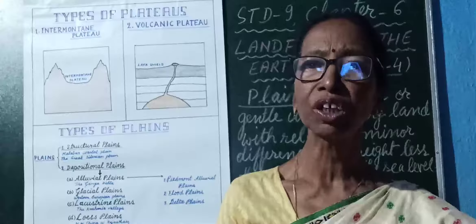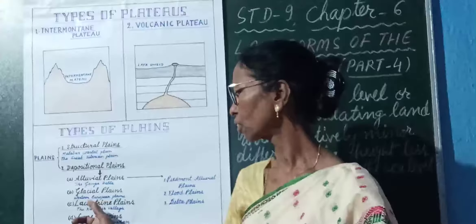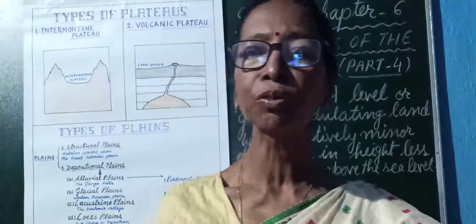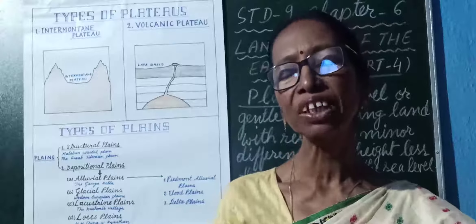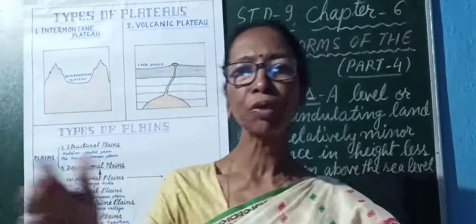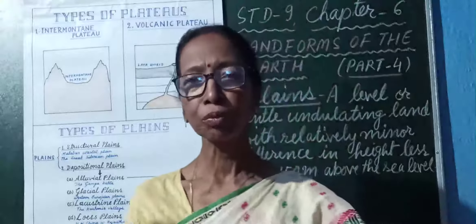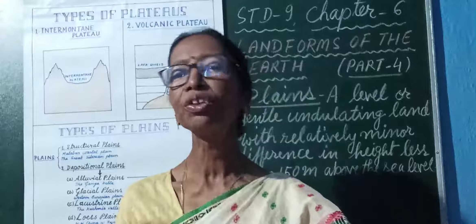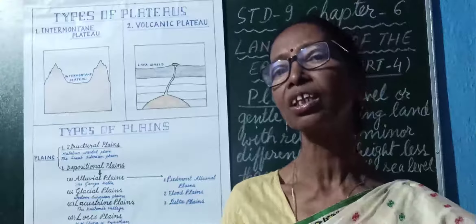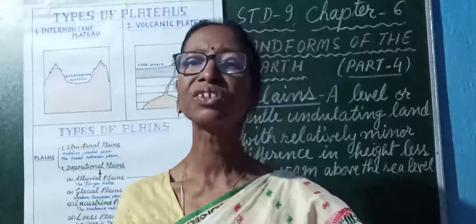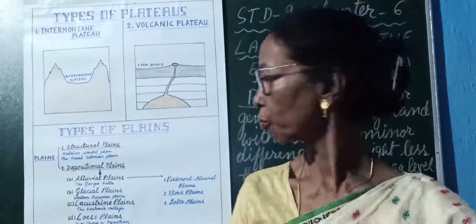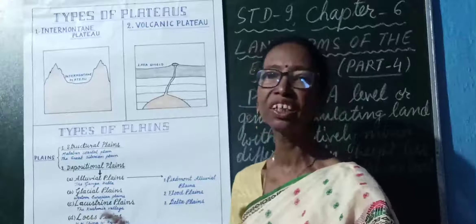So these three types — Piedmont Plain, Flood Plain, and Delta Plain — are formed due to the depositional work done by rivers. They deposit alluvium and form plains. These are the different types of alluvial plains. The second depositional plain is the Glacial Plain. When glaciers bring lots of sediments, known as debris or moraines, and deposit them over a large low-lying area, plains are formed known as glacial plains. For example, in the Western European plains, large plains have been formed due to the deposition of moraines brought by glaciers.